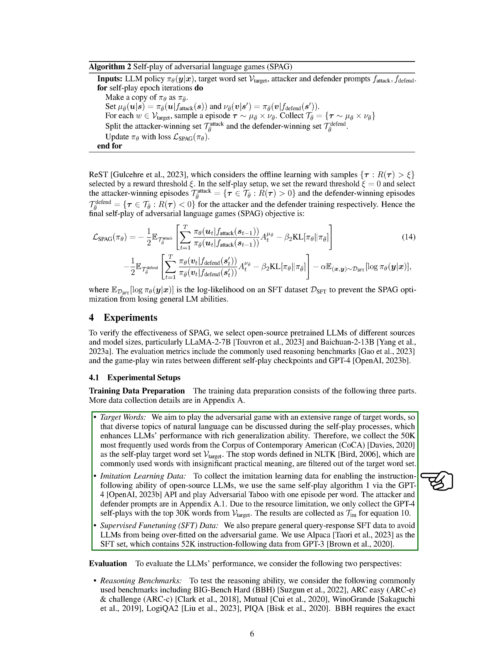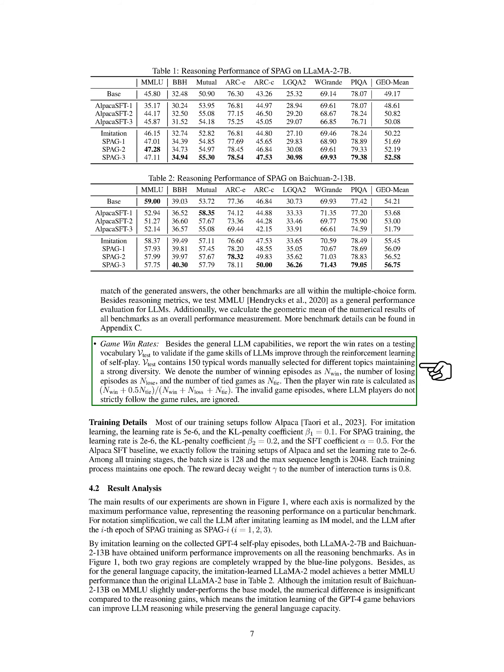To evaluate the LLM's performance, we considered reasoning benchmarks and game win rates. The reasoning benchmarks included various tests to assess the LLM's reasoning ability, while the game win rates were calculated based on performance in a testing vocabulary set. In terms of training details, we followed specific setups for imitation learning, SPAG training, and supervised fine-tuning. We used different learning rates and penalty coefficients for each training stage, maintaining consistency in batch size and sequence length.